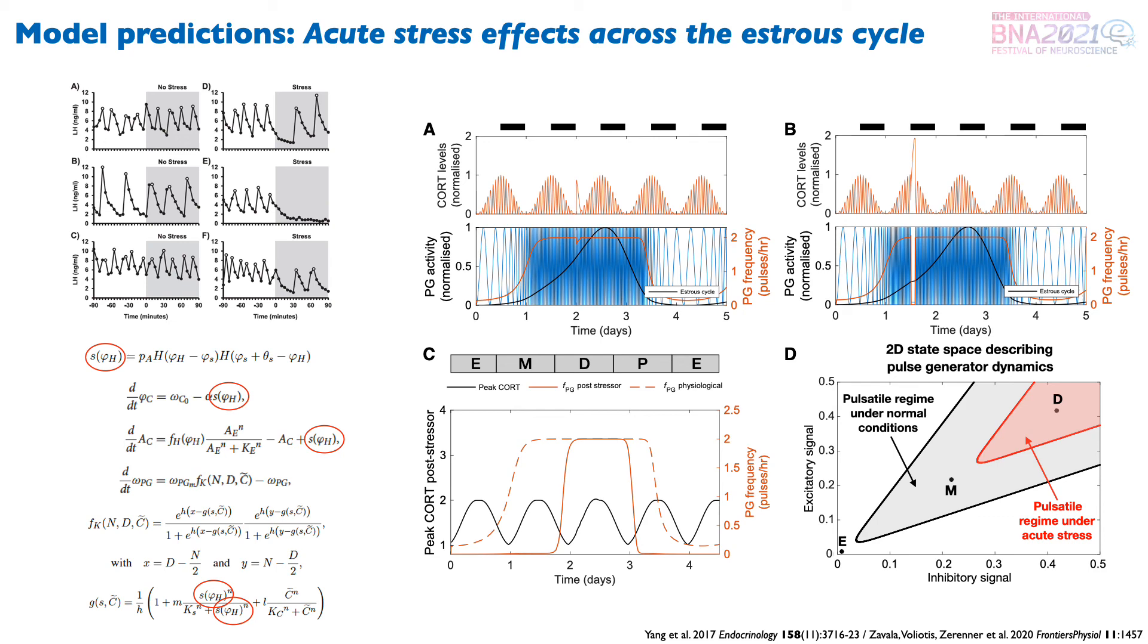We interpret this as a region of dynamic robustness where the estrous cycle becomes resilient to acute stressors, perhaps as a mechanism to ensure that ovulation takes place. We also calculated how the balance of inhibitory and excitatory signals in the KNDy network guarantees pulsatility and how this balance becomes fragile under acute stress.